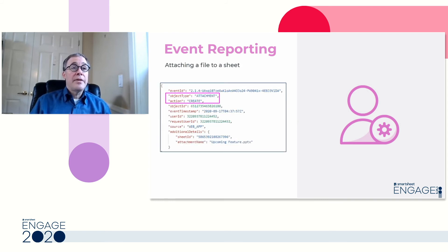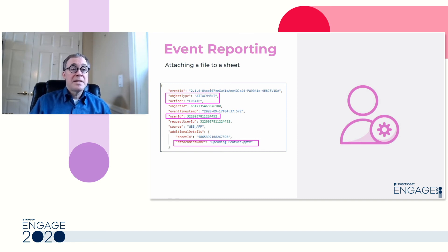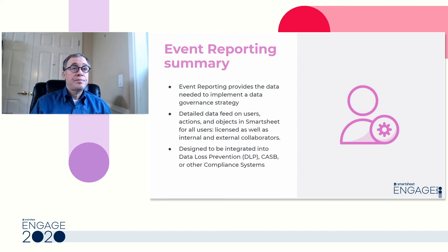Now let's take a brief look at another event — for example, attaching a file to a sheet. A user is creating an attachment to a particular row. This is the user that did it, and this is the attachment name — a PowerPoint file called upcoming feature. So Event Reporting runs in the background and collects different events as users use Smartsheet. To summarize Event Reporting: it provides the data you need to implement a data governance strategy. It's a very detailed data feed on users, actions, and objects in Smartsheet, and it's designed for integration into another system — most customers integrate into a DLP, CASB, or another compliance, monitoring, or database system.